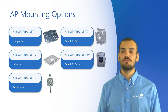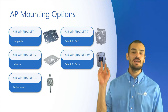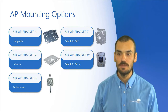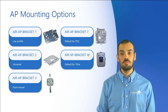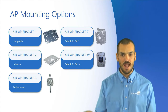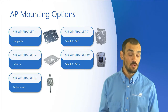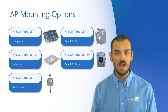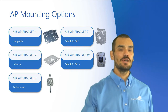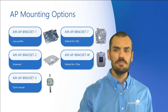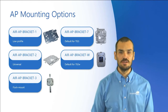Bracket W is the default for the 702W, also known as the wall plate access point. It mounts the access point on a wall using standard wall plates like those we find for outlets and light switches, so you don't have to cut any more holes, and usually you have power coming into them anyway. In addition to the brackets themselves, there are some mounting considerations to keep in mind.